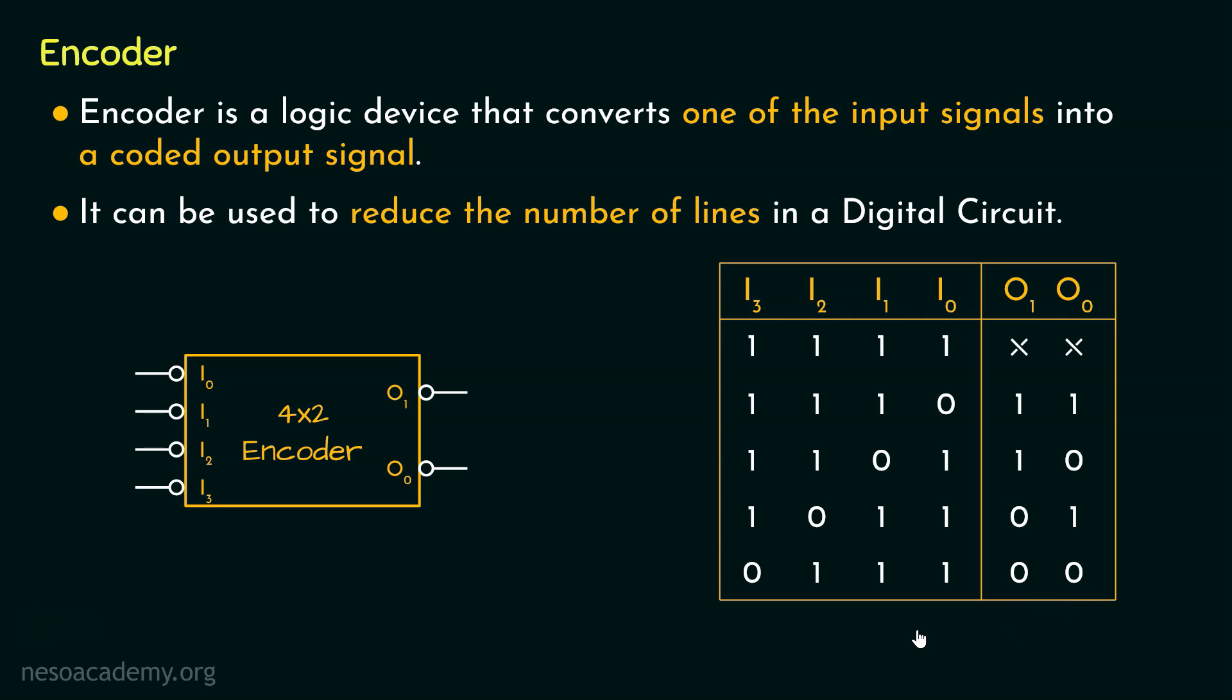In other words, the output sequence 11 will specify that I0 is active, 10 is going to specify that the input line I1 is active, 01 will specify the input line I2 is active and 00 output sequence is going to specify that the input line I3 is active.